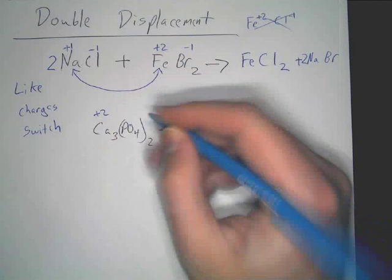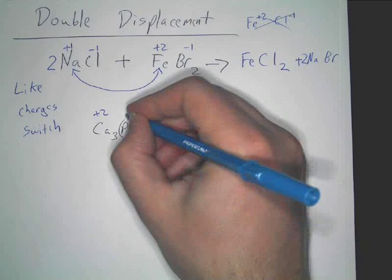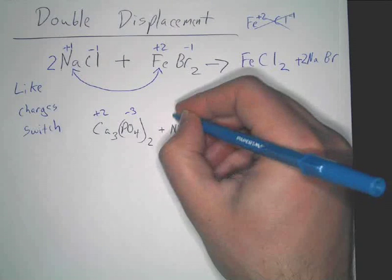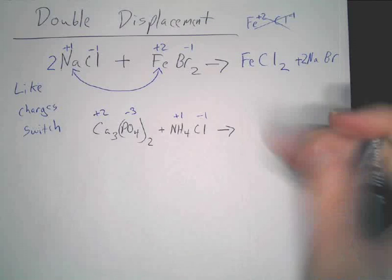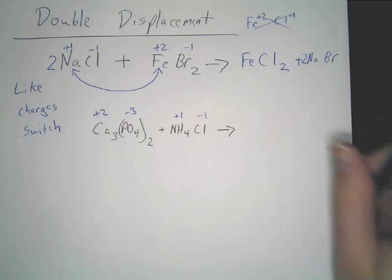Calcium's plus two, and I suggest you probably use your ion chart. Phosphate's negative three, NH4 is plus one, chlorine's minus one. So, you take this, and you look, and you say, well, what's going to switch?